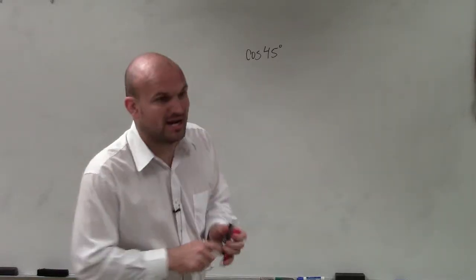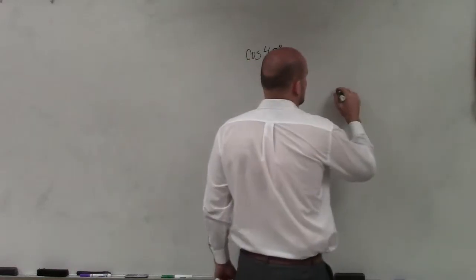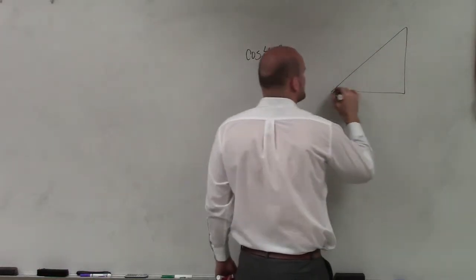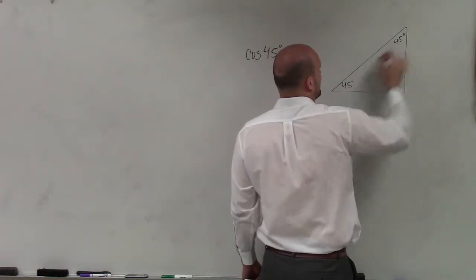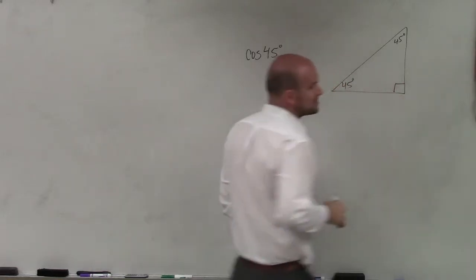So special right triangles, if you guys remember, we had a 45-45-90 triangle. A 45-45-90 triangle looked like this: 45 degrees, 45 degrees, and 90 degrees.